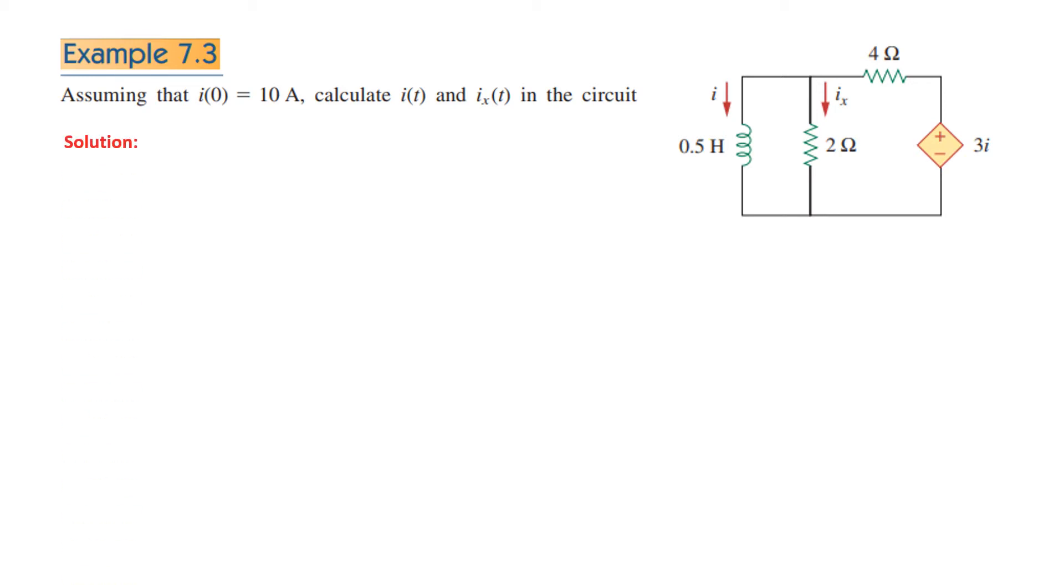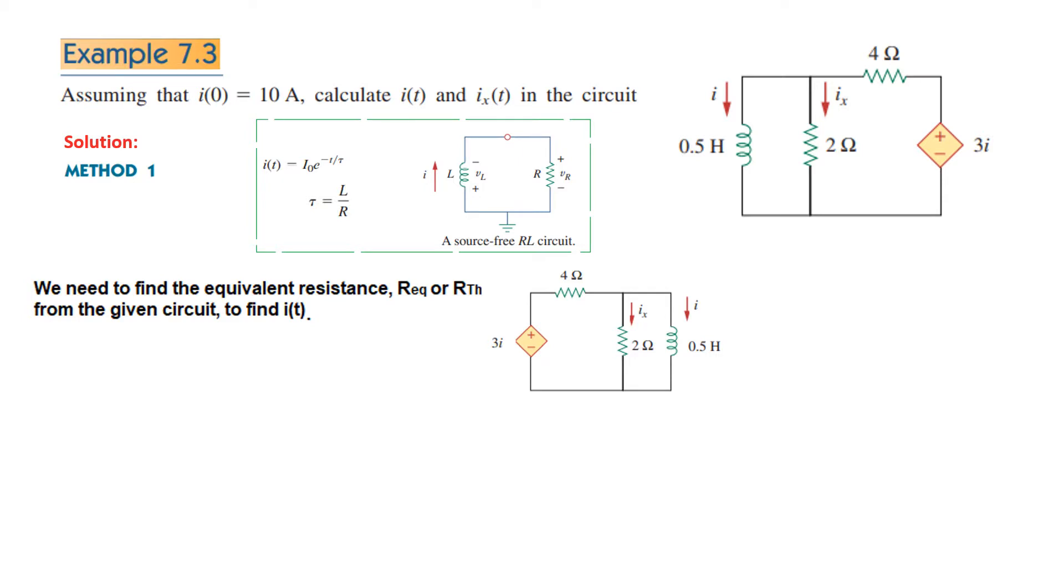Now there are two methods of solving this. We will do both. In the first method, we know that for the source-free RL circuit, the current equation is given by I(t) = I₀e^(-t/τ), where τ is L over R. So we need to find R in this circuit, since L is given.